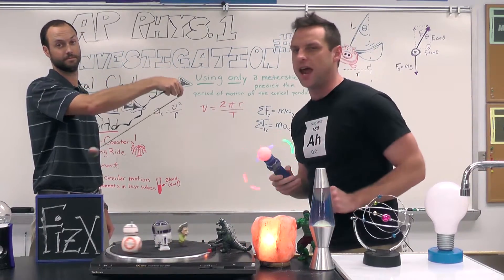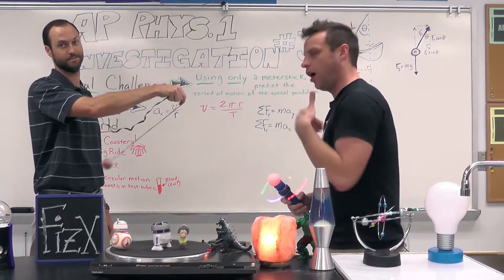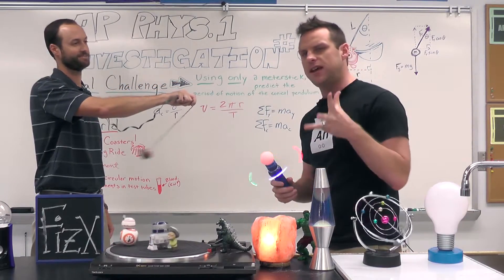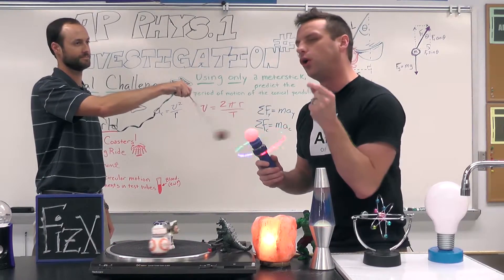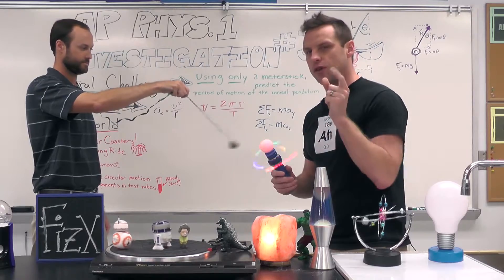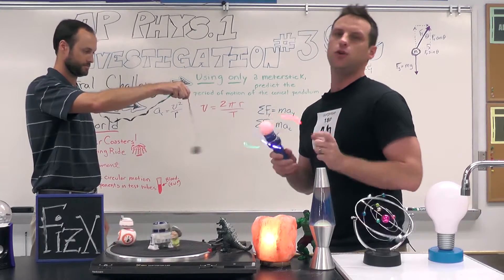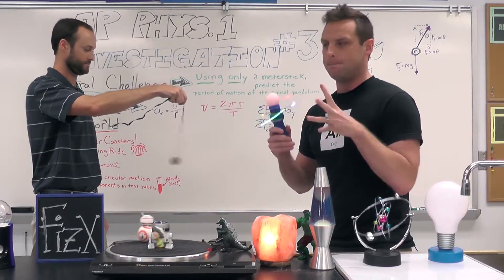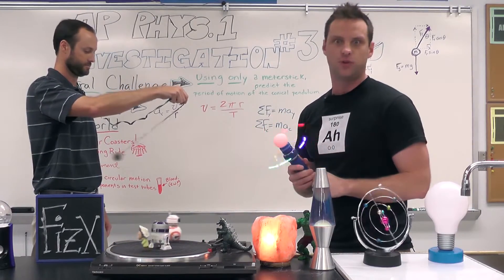Your challenge today is to be able to look at a conical pendulum and predict with only a meter stick as a tool the period of revolution for that conical pendulum. We will then use a stopwatch to measure the period and see how close you were.